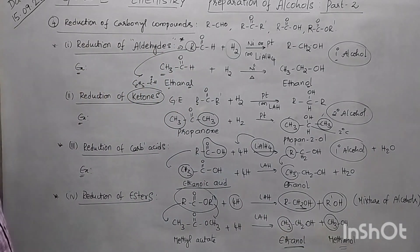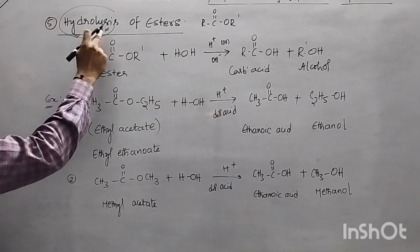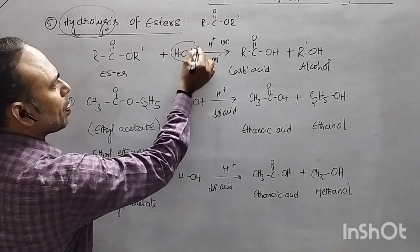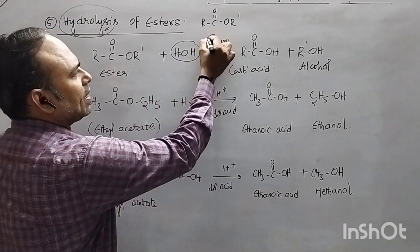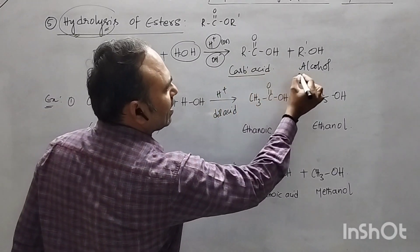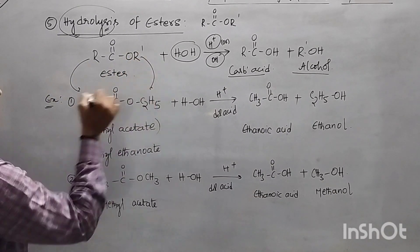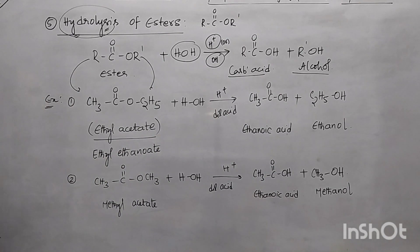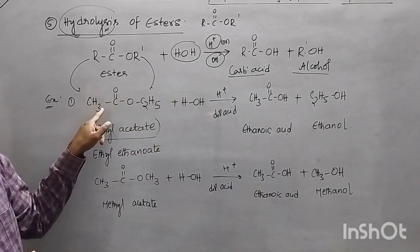Now let's complete the preparation with the last method: hydrolysis of esters. Hydrolysis means breakage — breakage in the presence of water. Esters of the form RCOOR', in the presence of water under either acidic or basic conditions, give a carboxylic acid and an alcohol. Taking an example where R is methyl and R' is ethyl, the starting material is ethyl acetate, and in the presence of dilute acid, hydrolysis takes place.